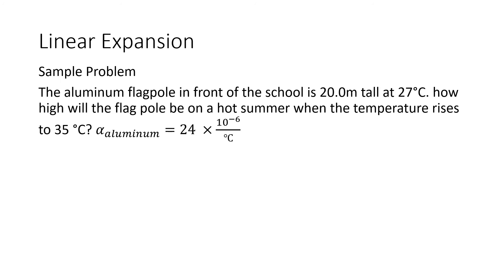Let us now solve a problem involving linear expansion. The aluminum flagpole in front of a school is 20 meters tall at 27 degrees Celsius. How high will the flagpole be on a hot summer day when the temperature rises to 35 degrees Celsius? The coefficient of linear thermal expansion for aluminum is 24 times 10 raised to negative 6 per degree Celsius.